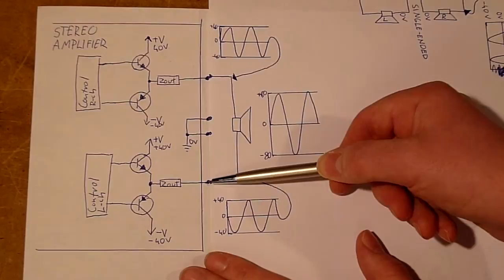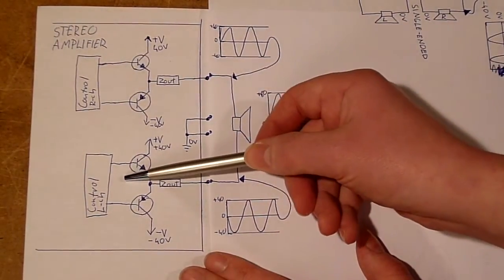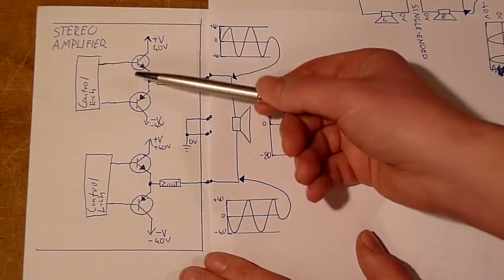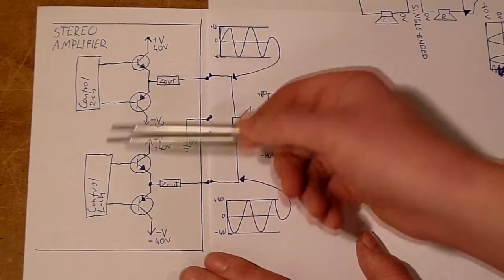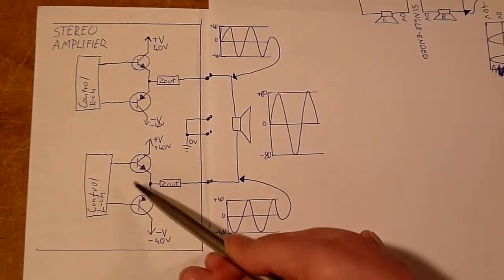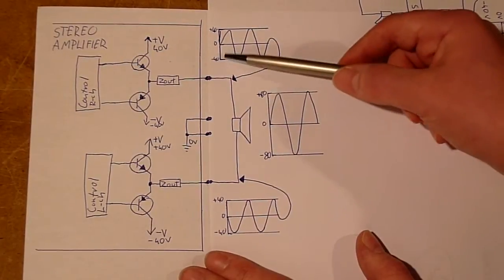And in order to get this to work we need to make this amplifier put out the exact opposite of what this amplifier is putting out. So we invert the signal going into one of the amplifiers and what we end up with is something like this.